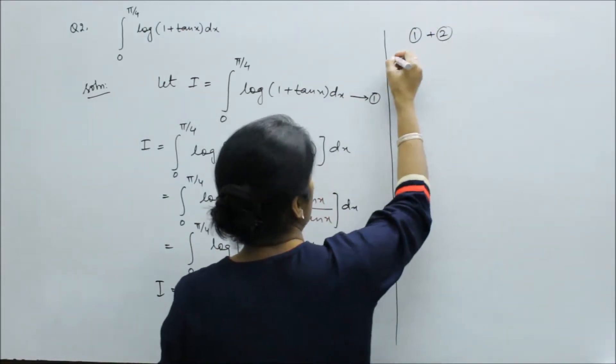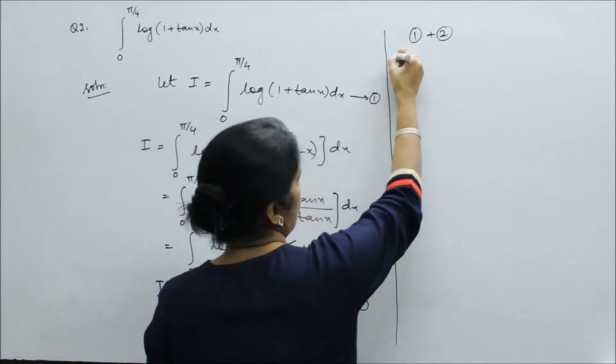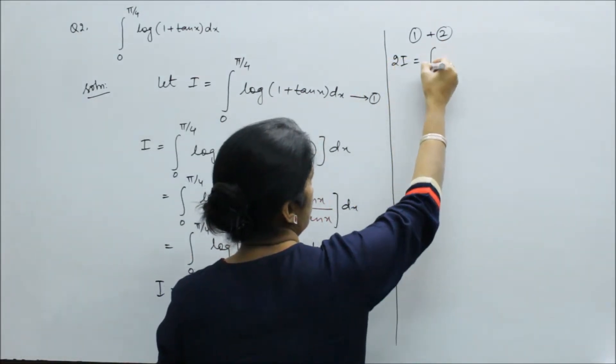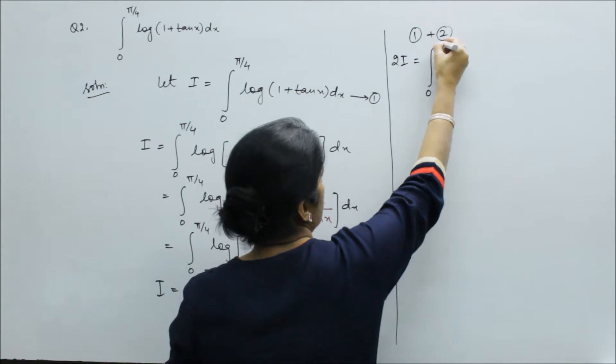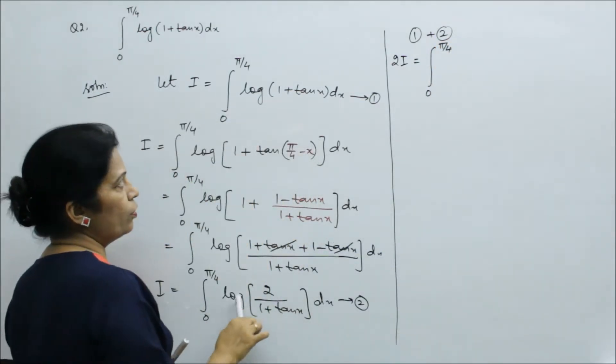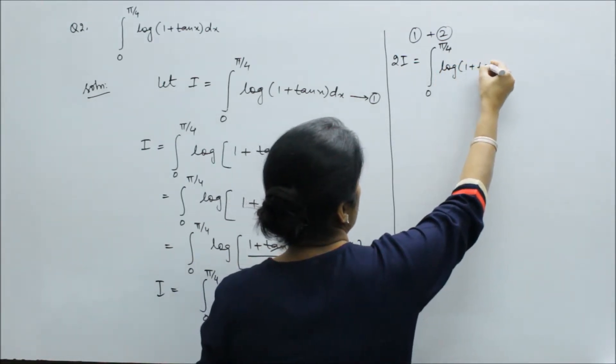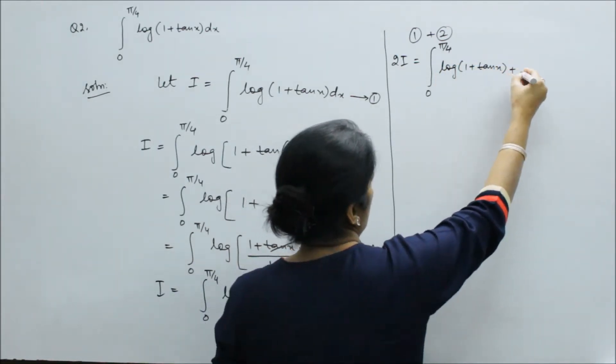Keep in mind, the integrals add up to get 2I. This equals, both have the same limits, so take the integral formula with limits. The terms inside are log of (1 + tan x) plus log of 2 upon (1 + tan x).